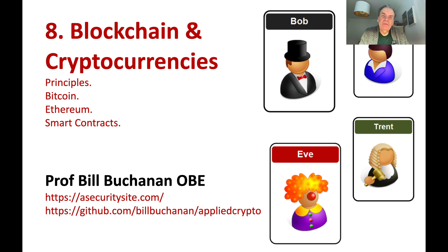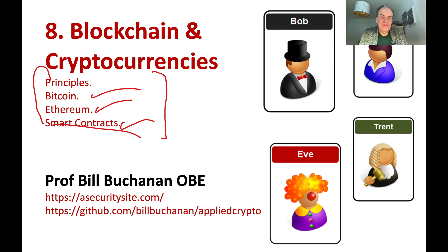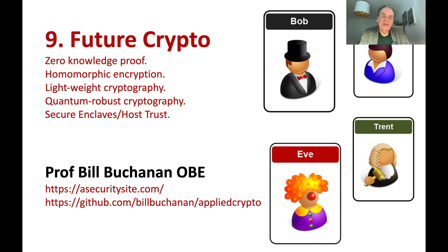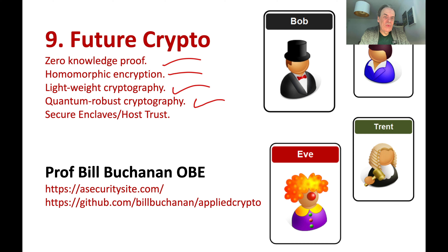Then we'll look at some of the modern methods for building blockchains and cryptocurrencies, with a focus on Bitcoin and Ethereum, and then how we create smart contracts. In fact, we'll have a lab that allows us to build smart contracts and create our own cryptocurrency. Then we'll look to the future and examine cryptography developed to address current issues around privacy and trust — including zero knowledge proofs, homomorphic encryption, lightweight encryption, quantum-robust cryptography, and secure enclaves.